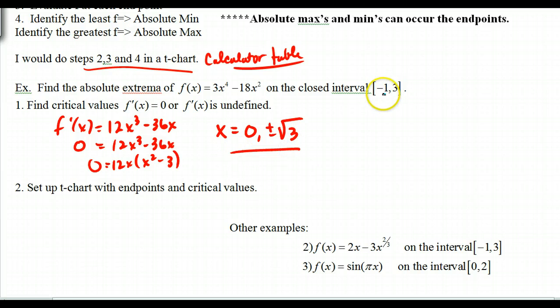Now negative square root of 3, I believe, is outside that interval. And so we'll ignore that one. So when we set up our t-table, I don't want a t, I want an x, sorry.